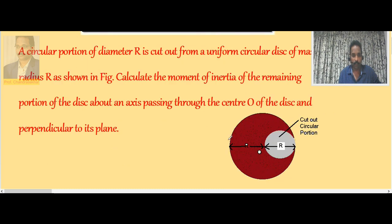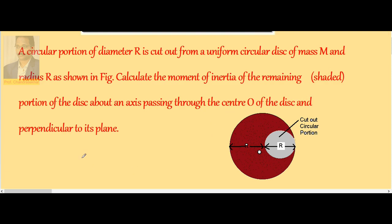Here we have a given circular disk from which a circular portion is removed. For the remaining part, we need the moment of inertia about an axis passing through the center and perpendicular to its plane. For the entire disk without cutting, the moment of inertia is I = MR²/2, which is the moment of inertia of a circular disk about an axis passing through its center and perpendicular to its surface.